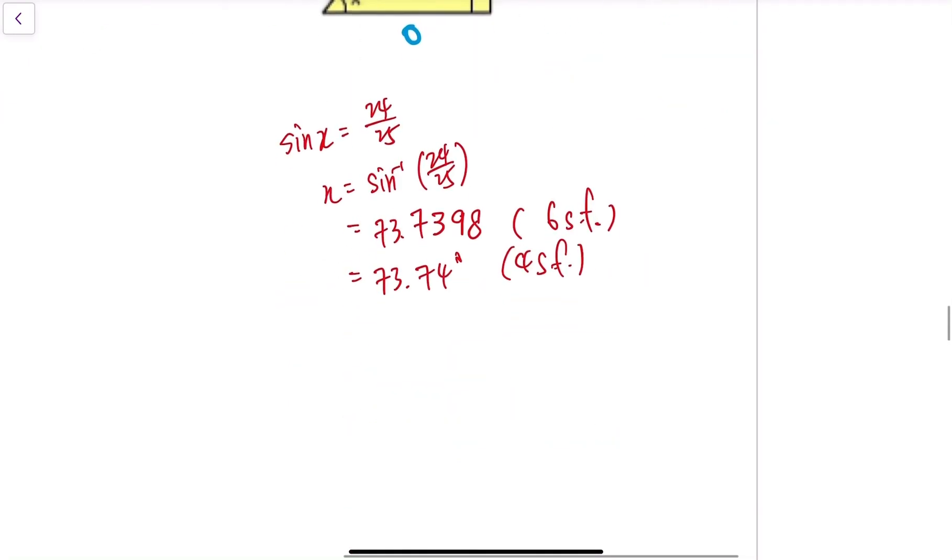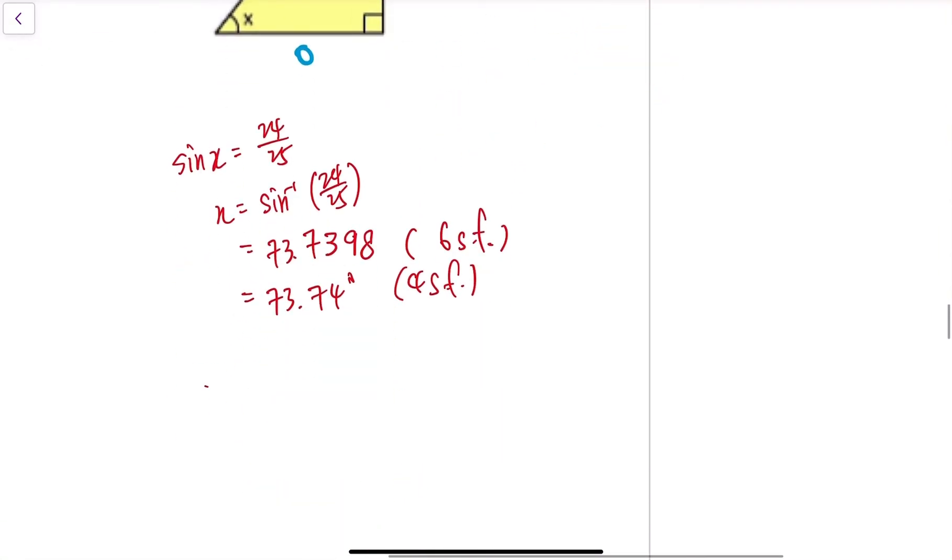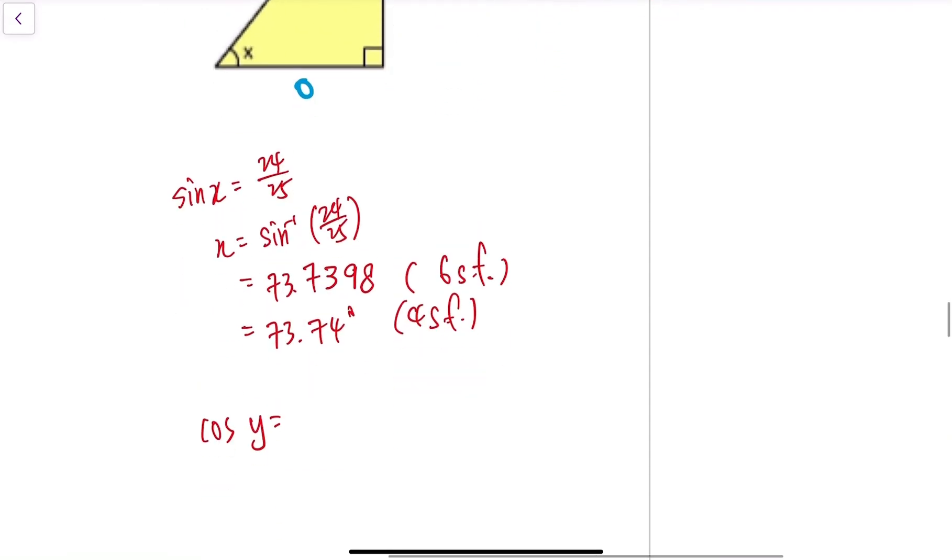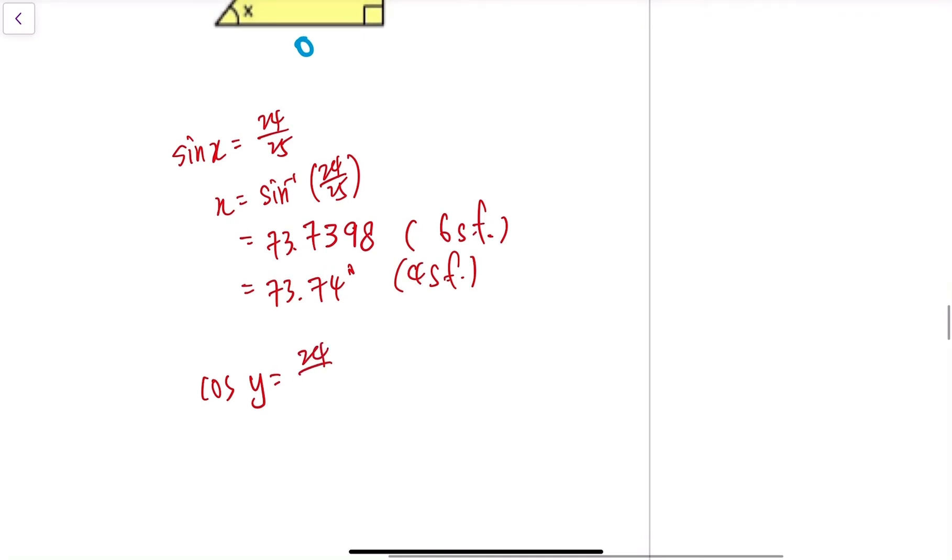Pythagoras theorem is not part of this worksheet, so we just use whatever we have. We practice using the information given to us for now. So we have cosine y equals 24 over 25.